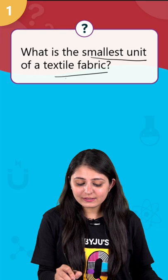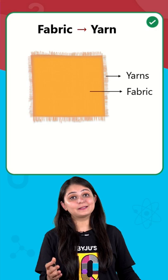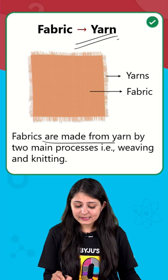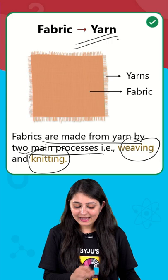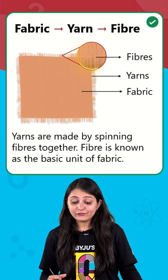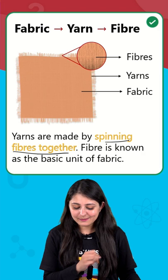We all know fabric is nothing but the cloth material, and it's made of yarn. Fabrics are made from yarn by two main processes: weaving and knitting. These loose threads, which are also known as yarn, are further made from fibers. So yarns are made by spinning fibers together.